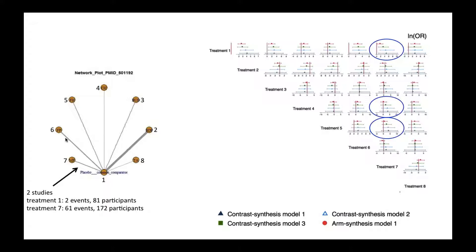The comparisons of treatment 4 to 7 and treatment 5 to 7 were actually indirect comparisons. In these three highlighted plots, we see that the arm synthesis model gives estimates that are closer to the null value with tighter confidence intervals.